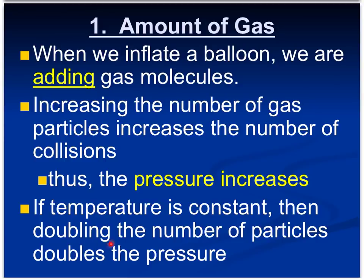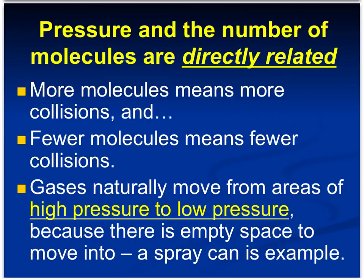Pressure and the number of molecules are directly related — as one goes up, the other goes up too. More molecules means more collisions, and fewer molecules means fewer collisions. Gases naturally move from areas of high pressure to areas of low pressure because there is empty space to move into. Aerosol cans are a great example: they are under high pressure, and the reason they spray is because outside the can is low pressure. Once the pressure inside starts to decrease, you can notice the spray starts to decrease because there's less pressure difference between the inside and outside of the can.